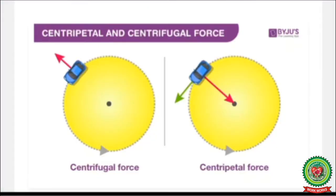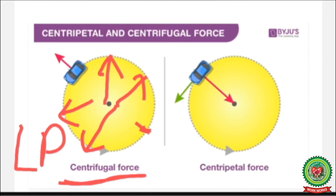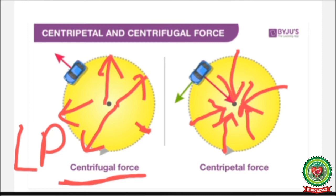The next factor is centrifugal force and centripetal force. These two forces are produced due to rotation of the earth. In centrifugal force, the air or anything mobile is thrown outward from the earth due to its rotation, so centrifugal force creates low pressure — for example, along the equator. In centripetal force, the air or anything mobile is attracted towards the earth, so centripetal force creates high pressure — for example, along the polar areas.